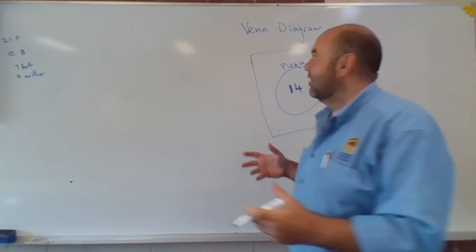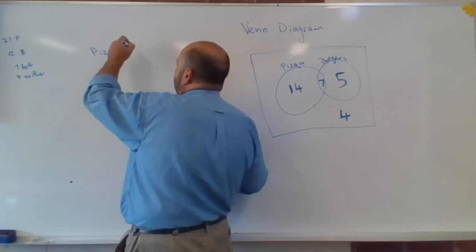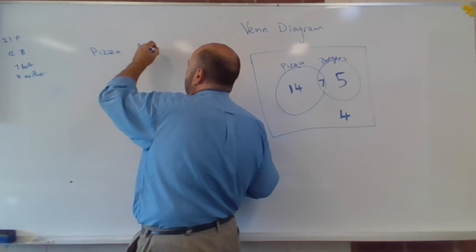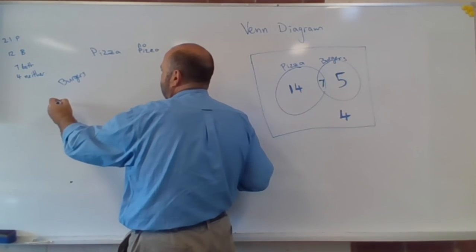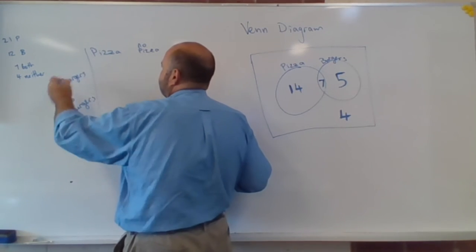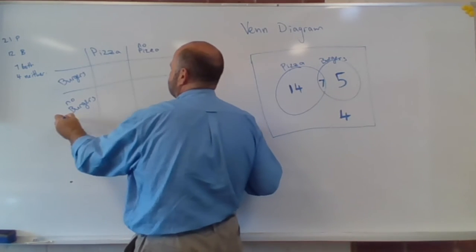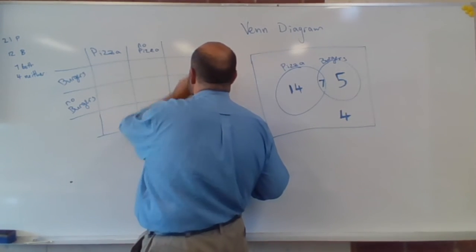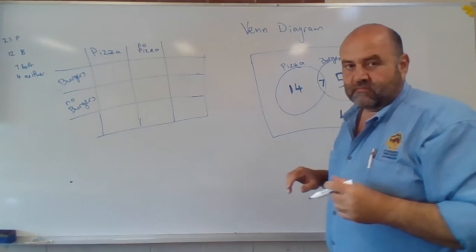So what we're going to do now, we're going to display this data in a two-way table. So a two-way table talks about those people who like pizza or who do not like pizza, those people who like burgers and those people who do not like burgers.